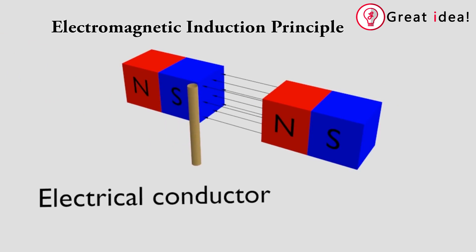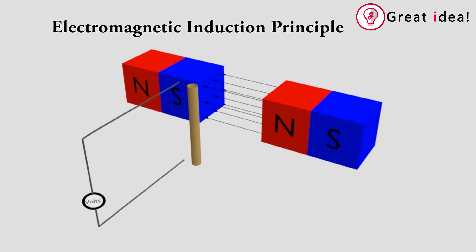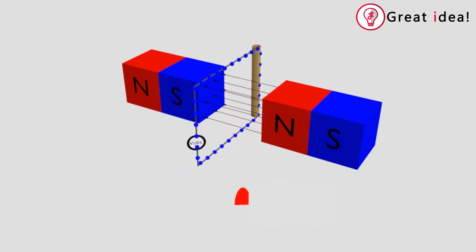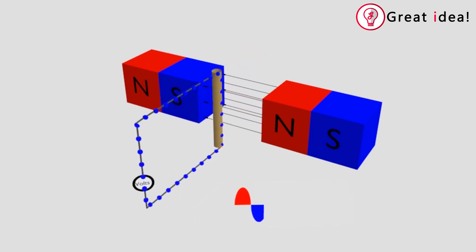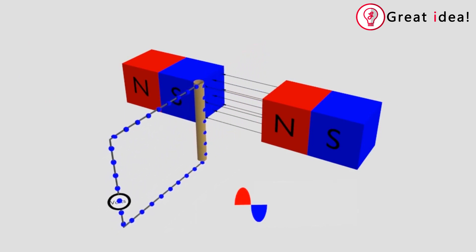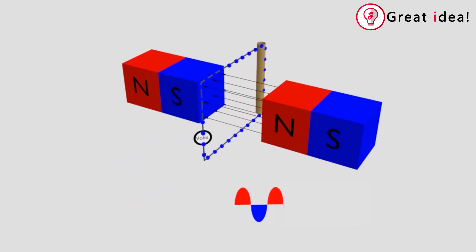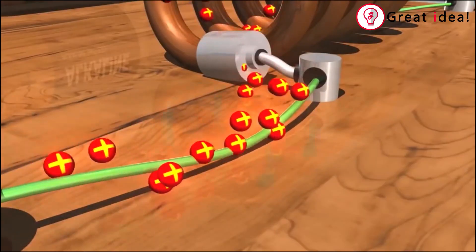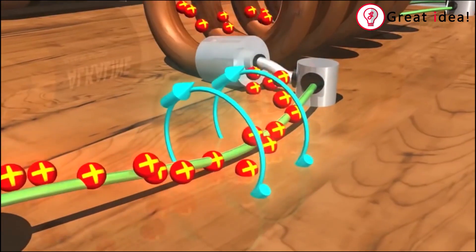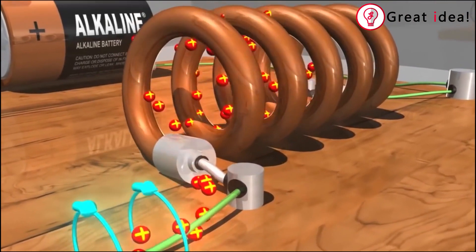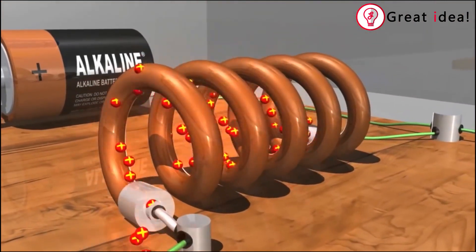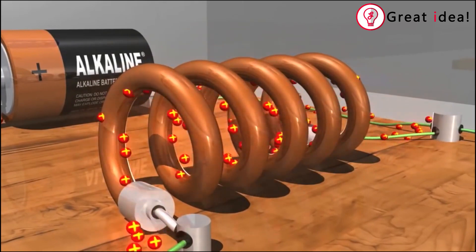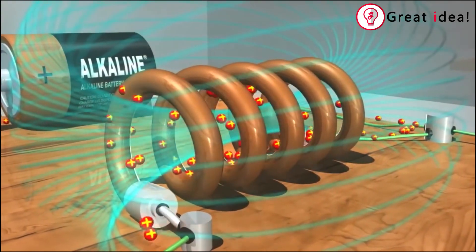Electromagnetic Induction Principle. If you look at a metal wire, it is a conductor. If you look at the magnetic field, it is induced — that is the induced current. If you look at the current, there is a magnetic field. If there are more turns, it increases the magnetic field.